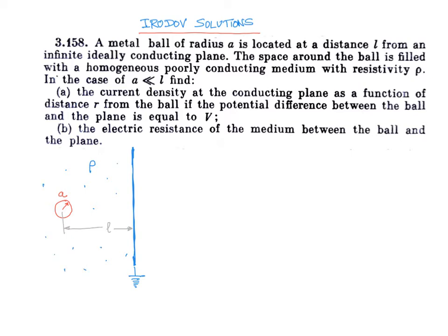We need to find the current density at the conducting plane as a function of distance r from the ball. At a point P on the plane, we have to find the current density, where r is the distance from the ball to point P.